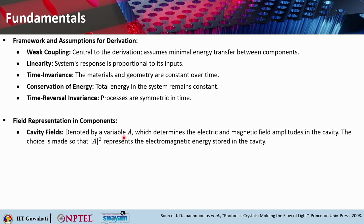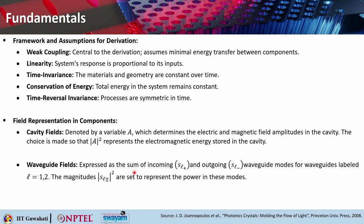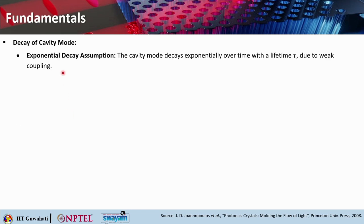The first field is the cavity field, denoted by variable A, which determines the electric and magnetic field amplitudes in the cavity. The choice is made such that |A|² gives the electromagnetic energy stored in the cavity. The waveguide fields are expressed as the sum of the incoming (S_L+) and outgoing (S_L−) waveguide modes for waveguides L = 1 and 2, where |S_L±|² represents the power in those modes. The cavity modes decay exponentially over time with a lifetime tau due to weak coupling.